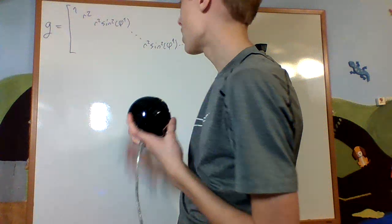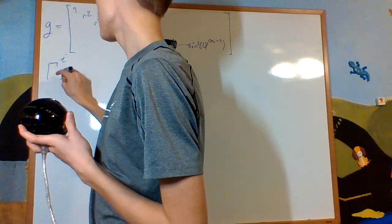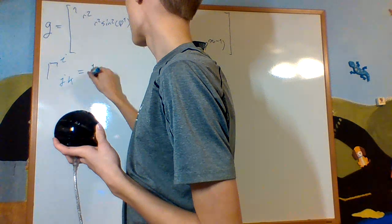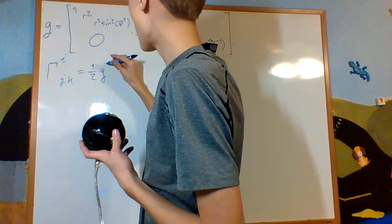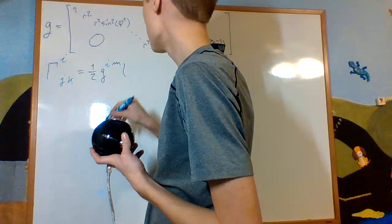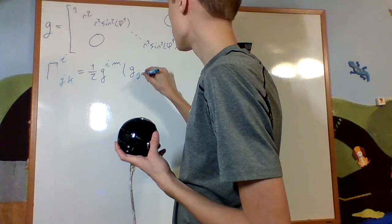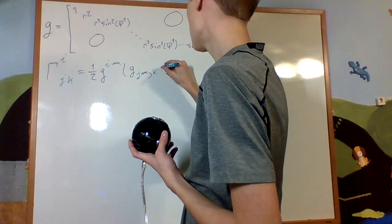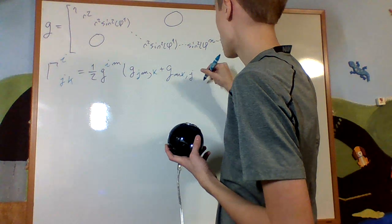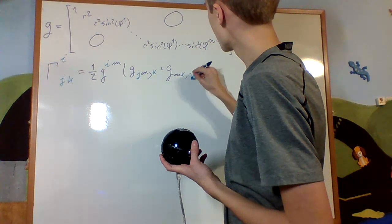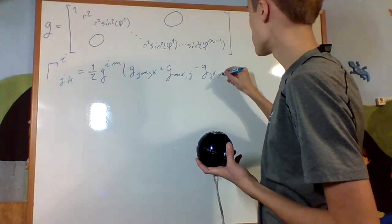Let's calculate the Christoffel symbols. These are the standard Christoffel symbols of the second kind: Gamma^i_{jk} = (1/2) g^{iM} (∂_k g_{jM} + ∂_j g_{kM} - ∂_M g_{jk}). We use a dummy index M, keeping J and K and cycling through the terms.